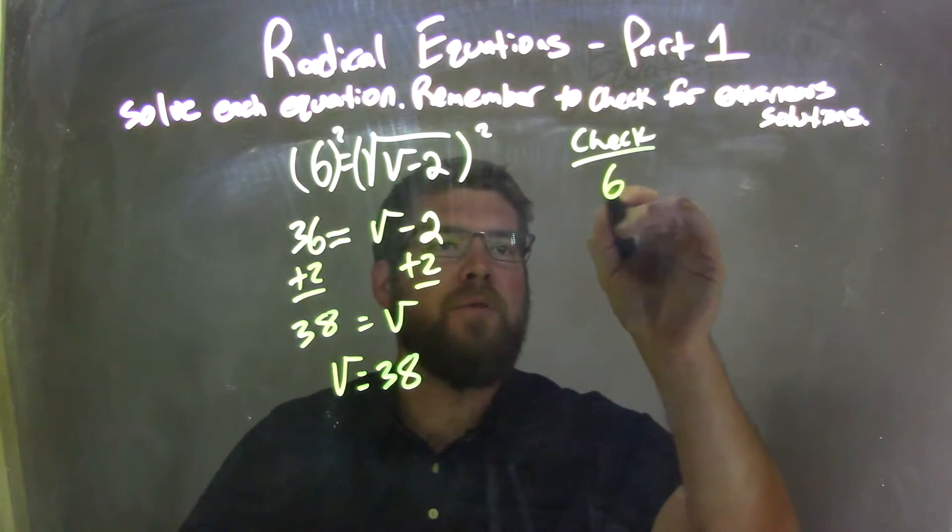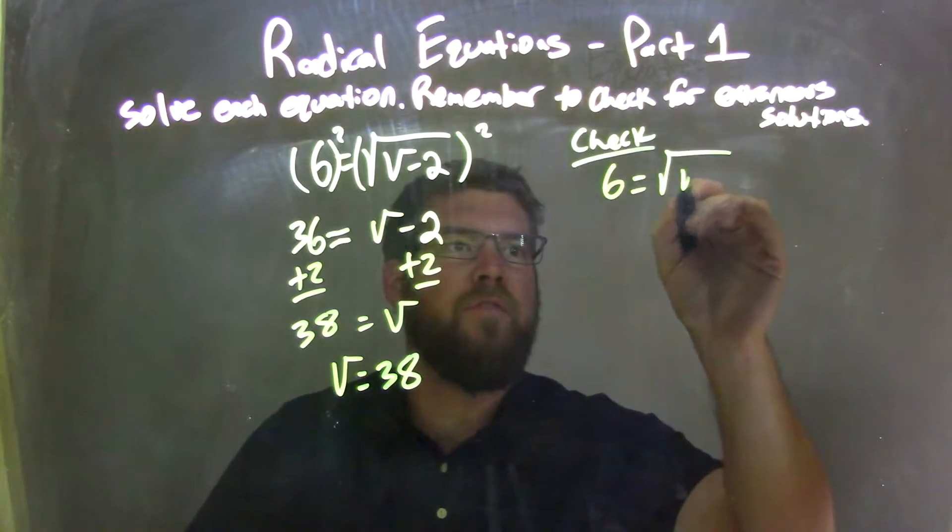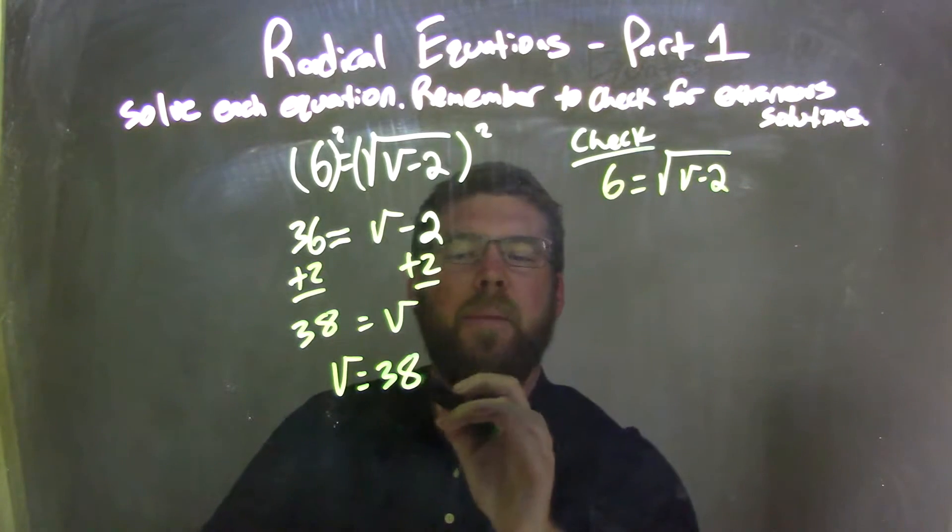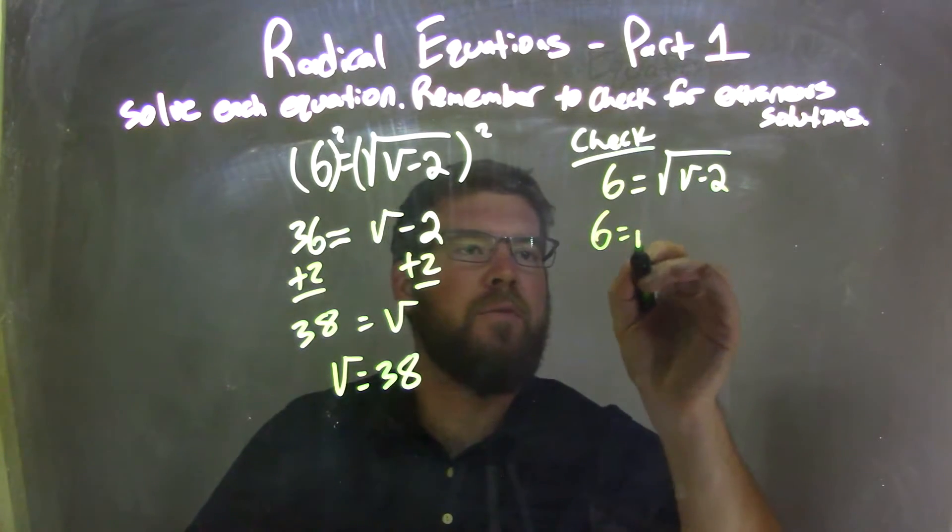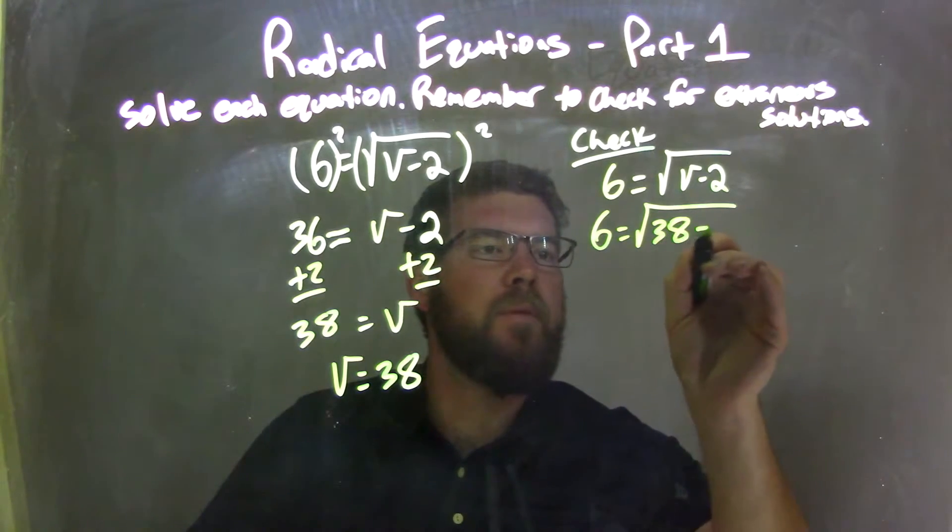So to check here, I write my original equation 6 equals the square root of v minus 2. And then I'm going to plug in a 38 for v. So 6 equals the square root of 38 minus 2.